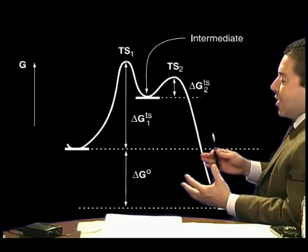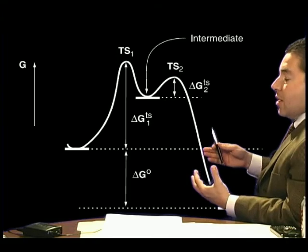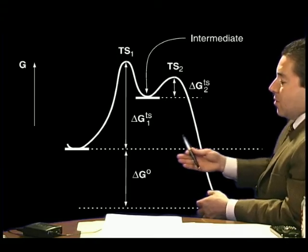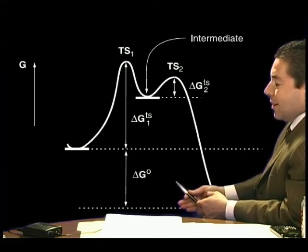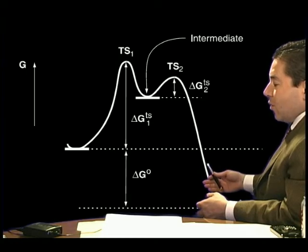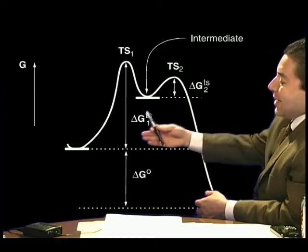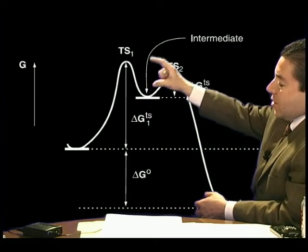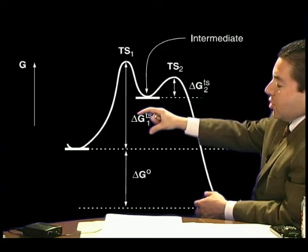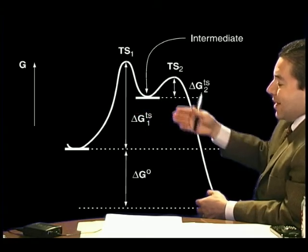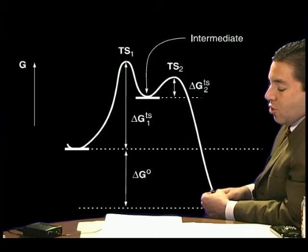So, this reaction energy profile can depict both the thermodynamics, in this case, an exergonic or spontaneous reaction, and kinetics of a reaction. In this case, it's a pretty large delta G transition state, conceptually speaking, and hence, a relatively slow reaction.